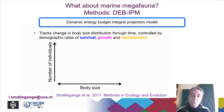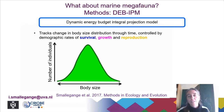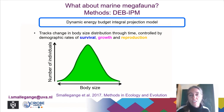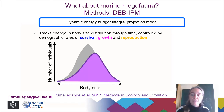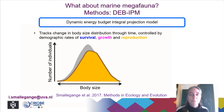How does it work? A dynamic energy budget integral projection model, like any integral projection model, tracks the changes in a body size distribution. Here is a body size distribution. Over time, some individuals die, so the body size distribution will decrease in size. However, individuals will also grow, so it can slightly shift its location. Individuals also reproduce, which means that over time, the frequency of the smaller individuals will increase.